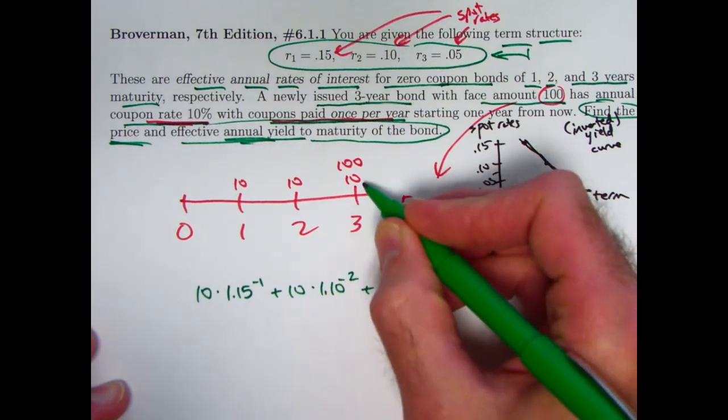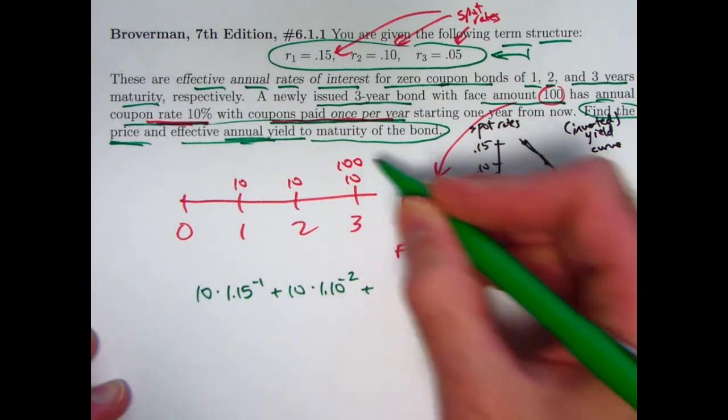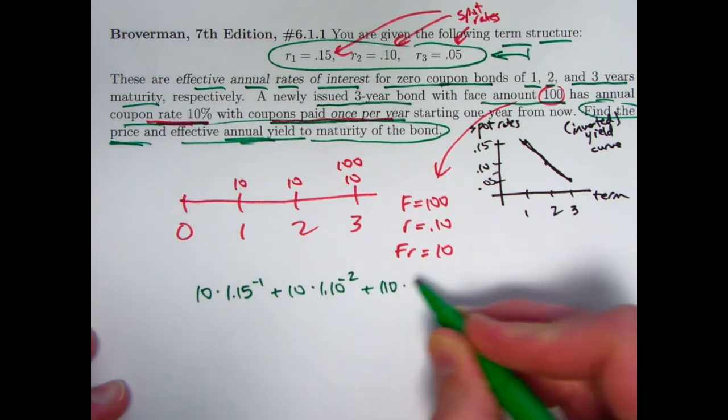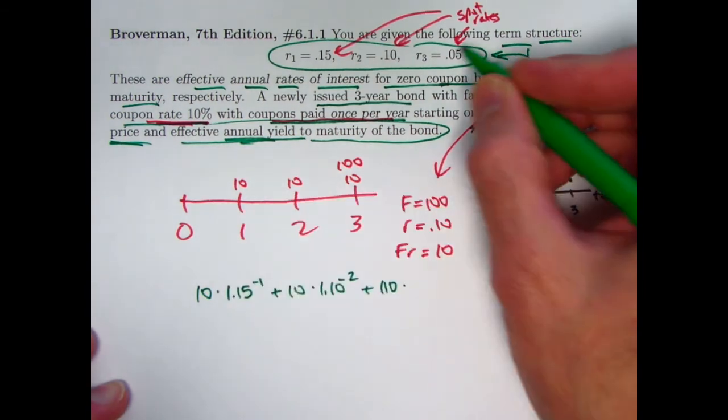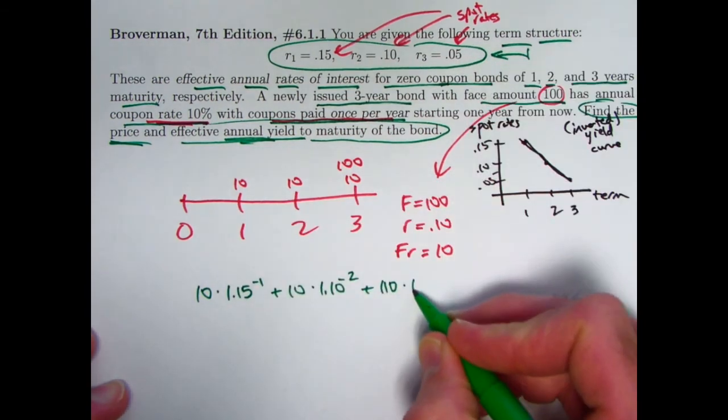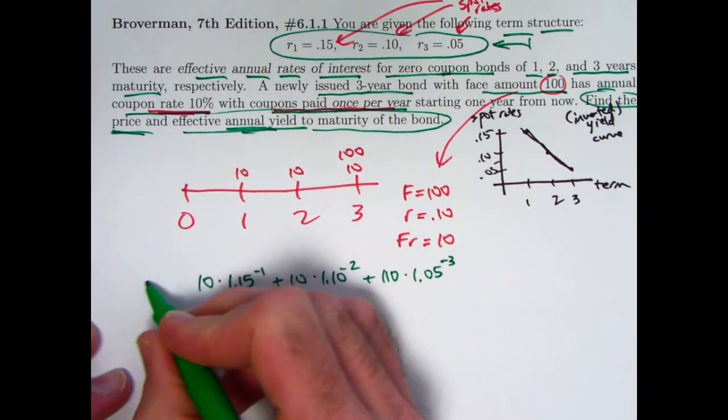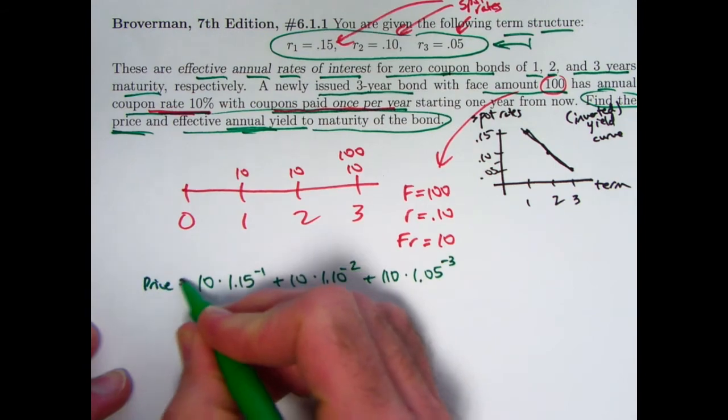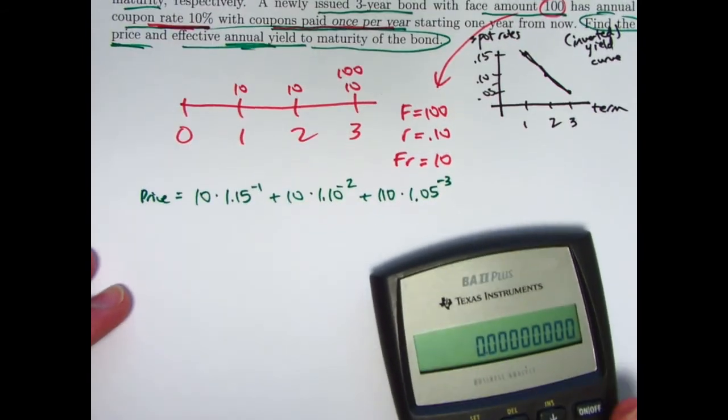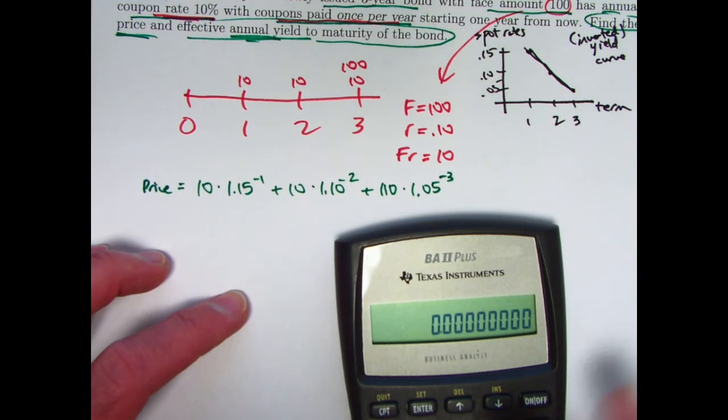And finally, you've got the 10 coupon and the 100 face amount at time three. You've got 110 coming back to you. Going back in time three years, use R3 multiplied by 1.05 to the negative three power. And that will be the price based on this perspective. Okay? So we go ahead and do this calculation now.